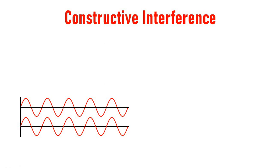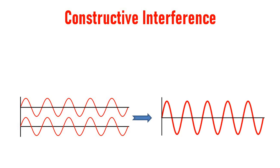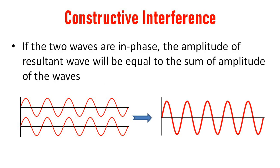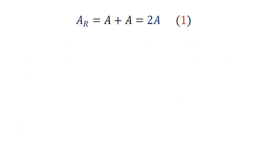So they can superpose to form a resultant wave. If the two waves are in phase, the resultant amplitude of the resultant wave will be equal to the sum of the amplitudes of the individual waves. That is, amplitude of resultant wave AR equals A plus A, which gives 2A — equation 1.